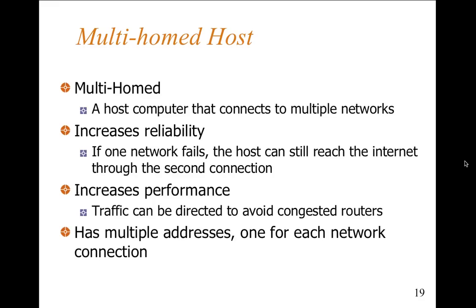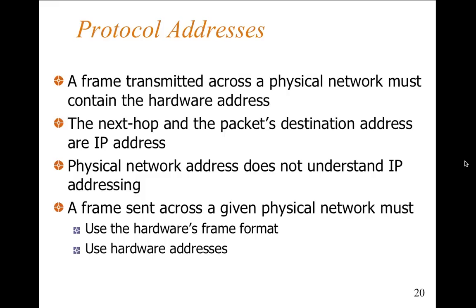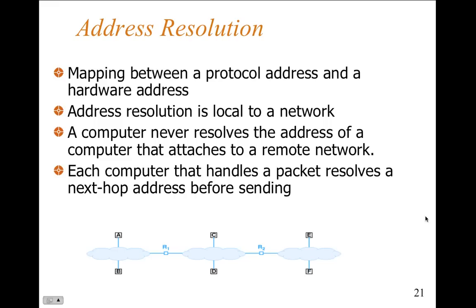A multi-homed host is a computer that connects to multiple different networks, increasing reliability and performance. It has multiple addresses, one for each network connection. In terms of protocol addressing, the frame transmitted across the physical network must contain the hardware address and MAC address. The packet's destination address — the IP address — and all the information necessary to get the packet from point A to point B. The physical network itself doesn't understand IP addressing, which is why we have different levels of addressing. You see this with Ethernet networks.